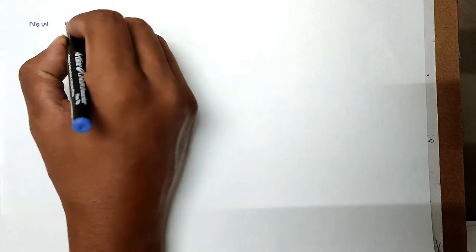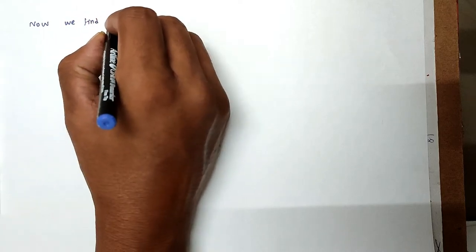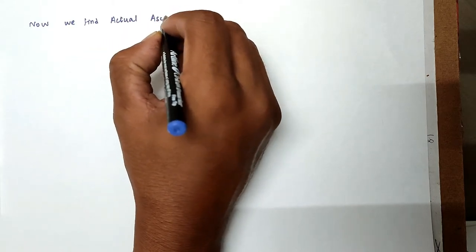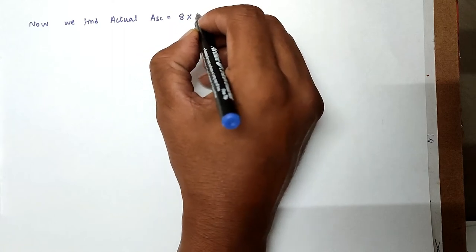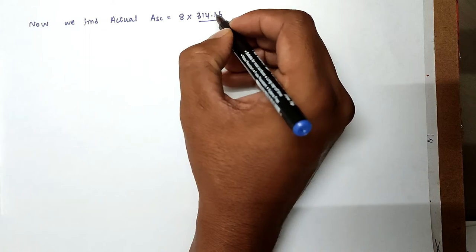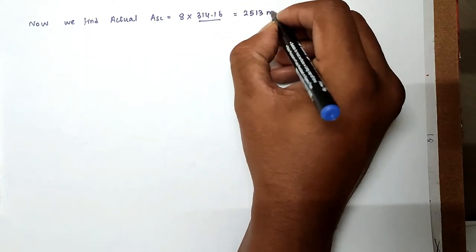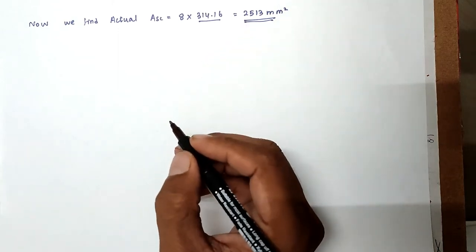Now find out the actual ASC. Actual ASC equal to 8 bars of 314.16 equal to 2513 mm square. So this is the actual area ASC.